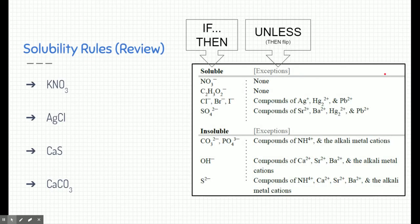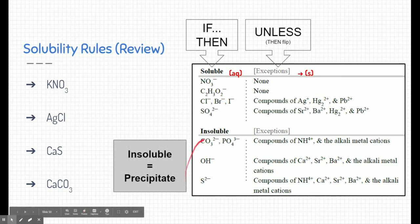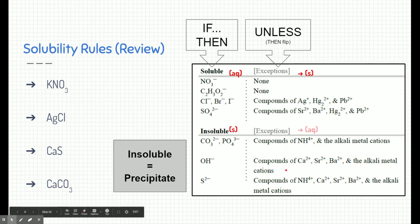How do we know whether it forms a precipitate or not? We use solubility rules, which are found on the back of your periodic table. These rules work as if-then statements: if you see certain particles in a compound, then that compound should be aqueous. But there are always exceptions. If these ions are attached to certain others, it flips to insoluble. Note that S does not mean soluble — S means solid, and insoluble means precipitate. Likewise, some compounds start as insoluble unless attached to exceptions, making them aqueous.